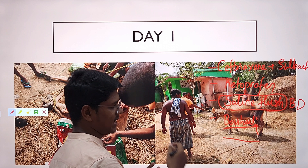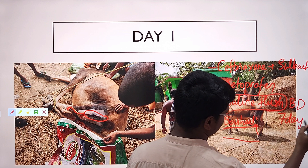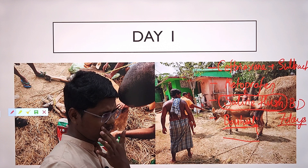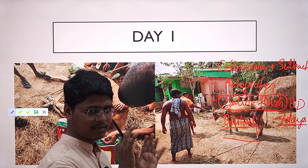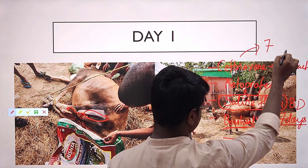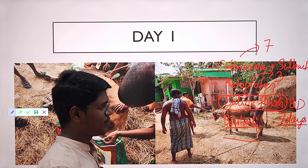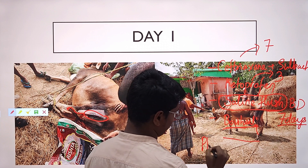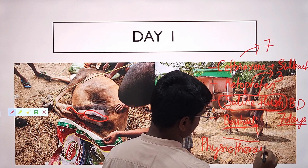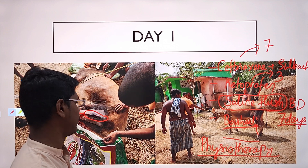I told the owner to do saline flushing twice daily for seven days, planning to remove the catheter on day eight or nine. The treatment protocol was: ceftriaxone-sulbactam for seven days, ketoprofen for three days. I also prescribed physiotherapy — hot fomentation twice daily, just after flushing.